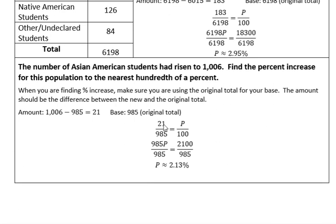So when I set this up, I have 21 is to the original total of 985 as P is to 100. Cross multiply, then divide by your coefficient — 985 is the number multiplying the variable. 2,100 divided by 985, rounded to the nearest hundredth, is about 2.13%. So they have seen an increase in that population of 2.13%. Have a fantastic day — I will talk to you soon.